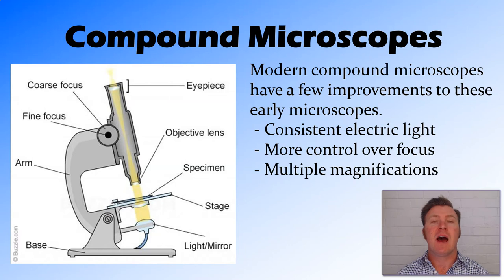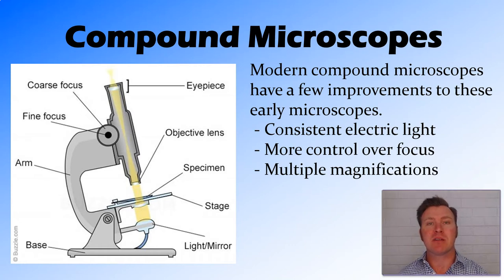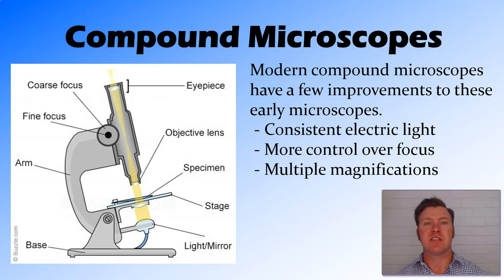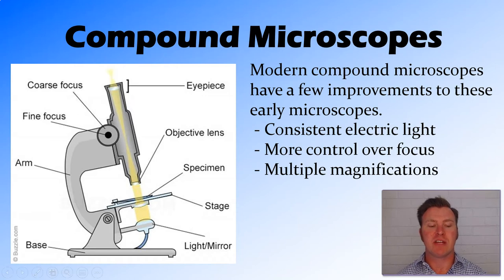In the first microscopes they were using ambient light from the sun. Other microscopes used a mirror to shine light up through the specimen, then we got into sources like candles, and these days we have electric lights in most of our microscopes. We also have more control over focus — we're able to change the distance between the lenses or between the microscope and the specimen with a high amount of control, which allows us to focus specimens really well. And there are the multiple magnifications I mentioned earlier.